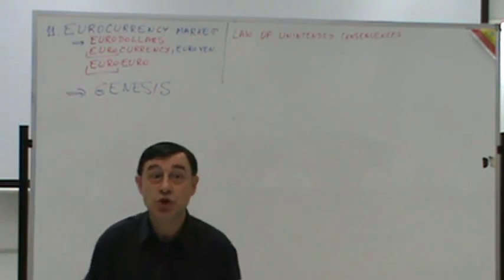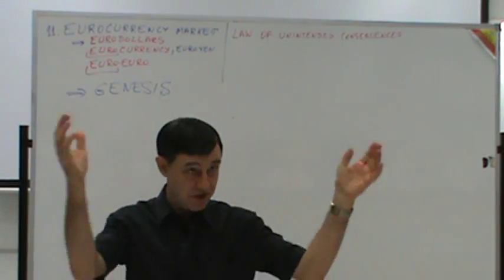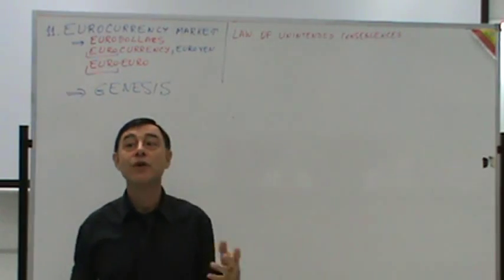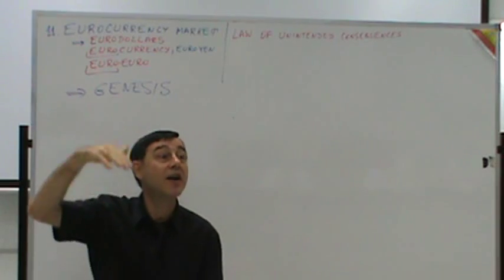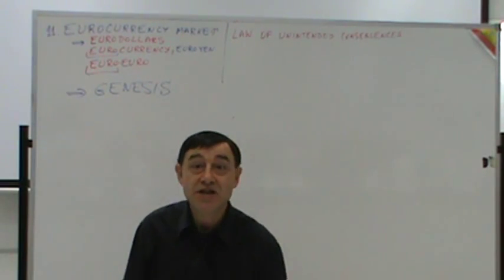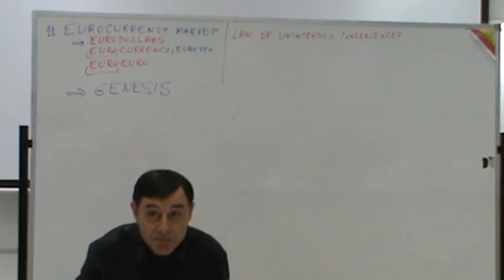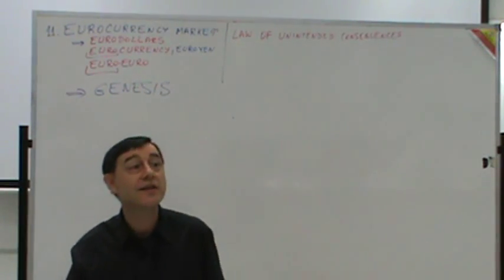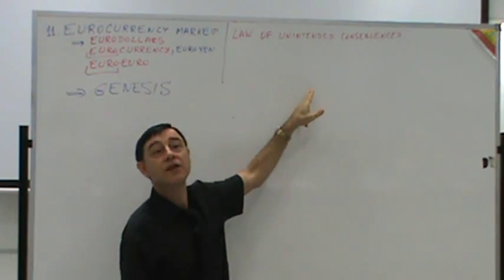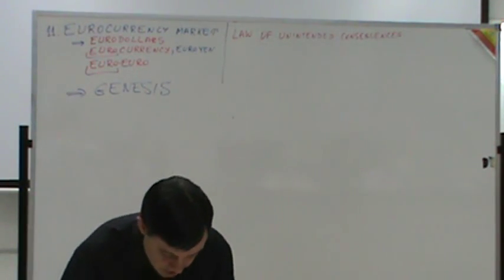The most profitable move for the landlord becomes destroying the building entirely, then rebuilding with a brand-new structure that qualifies for the new market rents at $4,000. As government maintains regulations, people find economic incentives to work around them — each one an unintended consequence after another. This is basically the genesis of the euro currency market.